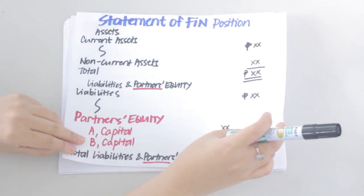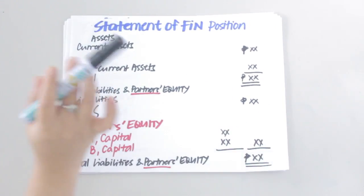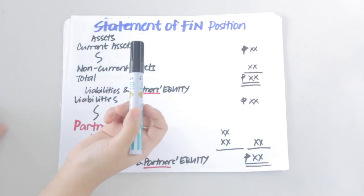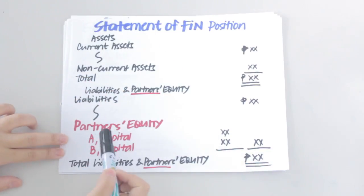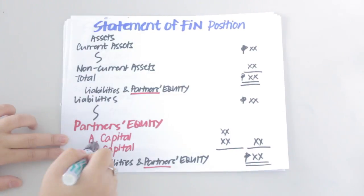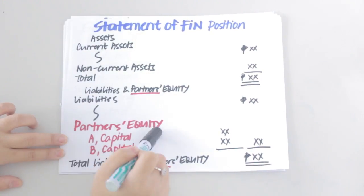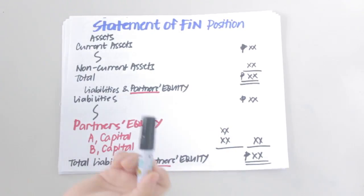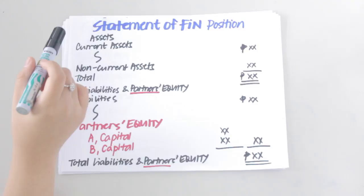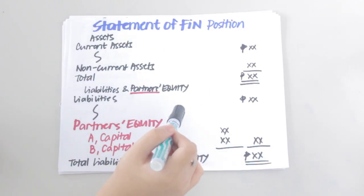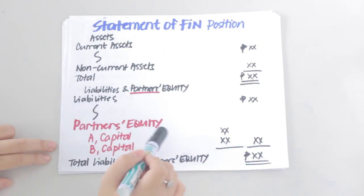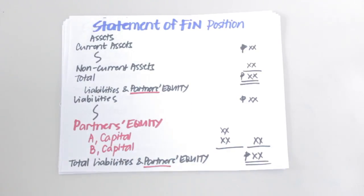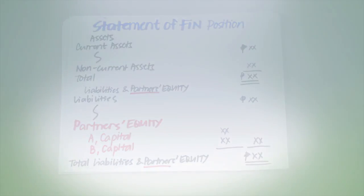Lastly, the statement of financial position is still the same, except now you have to list the capital balances separately for each partner and call it 'partners' equity.' This has been a simplified overview showing the areas where changes occur between a sole proprietorship and a partnership. I hope you learned a lot today.